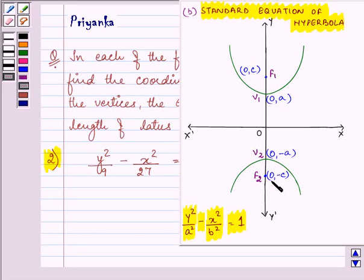Now, the general equation of the hyperbola in this form is y square by a square minus x square by b square is equal to 1.